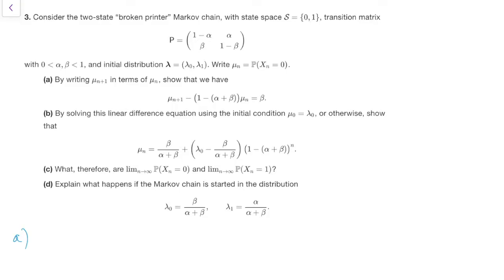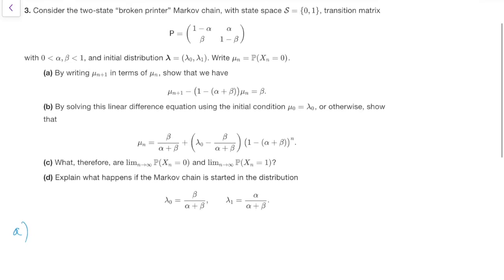Here's the question. We've got this two-state broken printer Markov chain, and we're writing μₙ to be the probability that we're in state 0 at time n. So obviously the probability we're in state 1 is 1 minus μₙ, because we have to be in one of the two states. Part A says: by writing μₙ₊₁ in terms of μₙ, show that whatever it is.